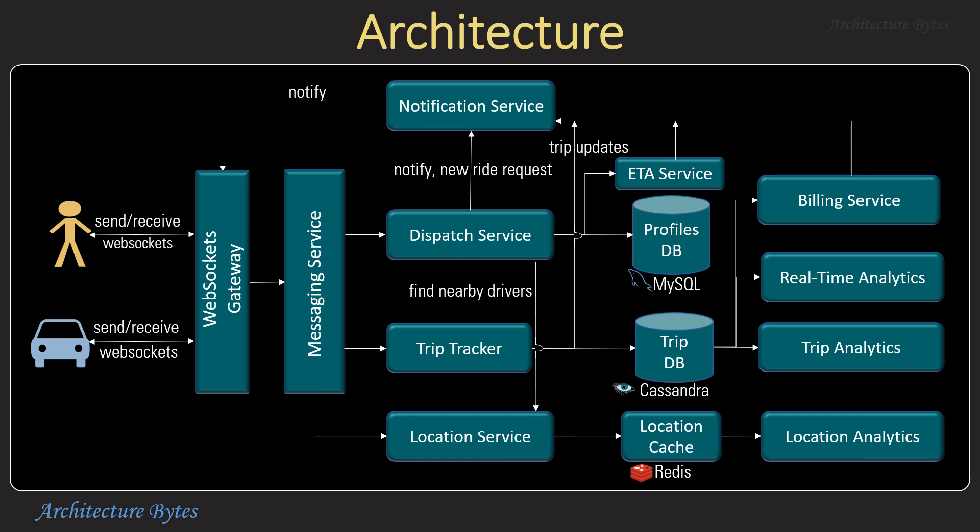Here's the complete architecture. A few additional services like a WebSockets Gateway and a messaging service behind it have been added. Client-to-server communication would happen over WebSockets, which is a two-way real-time asynchronous communication protocol. The messaging server provides a layer of abstraction between the WebSockets Gateway and microservices. The notification service also uses the WebSockets Gateway to send asynchronous messages over WebSockets to client applications. In addition, a few analytics-related services have been added to the architecture.